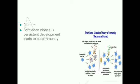A clone is a population of cells descended by asexual reproduction from a single cell. During intrauterine life, cells with immunological reactivity against self-antigens are eliminated. These clones are known as forbidden clones, and if they remain persistent, they result in autoimmunity.